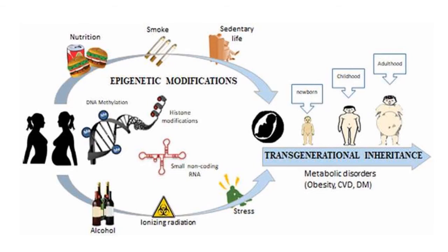Epigenetic modifications induced by nutrition, hyperglycemia, smoking, radiation, psychological stress, alcohol consumption, etc., can lead to a range of long-term metabolic disorders in offspring.